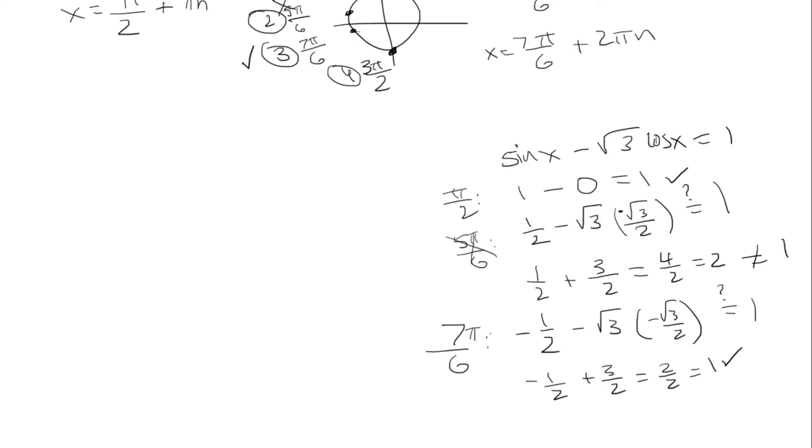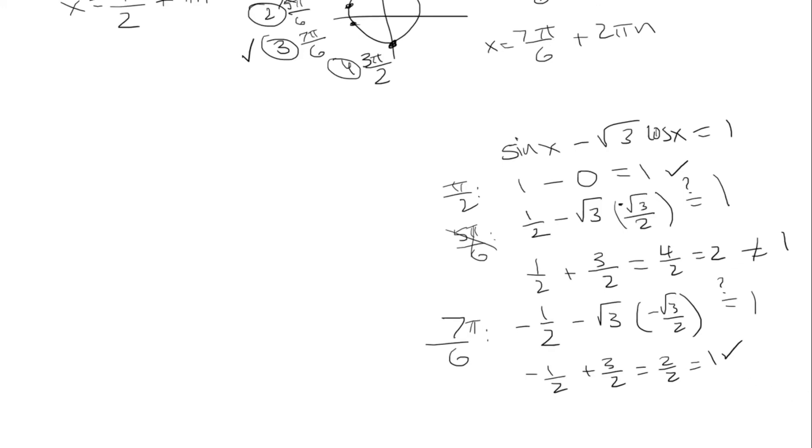Okay, finally, we want to test 3 pi over 2. So sine of 3 pi over 2 is negative 1 minus root 3. Cosine of 3 pi over 2 is 0, so I'm not going to bother. Does that equal 1? Well, obviously not. So this is bad as well. So I'm going to get rid of it.